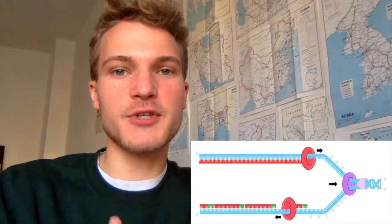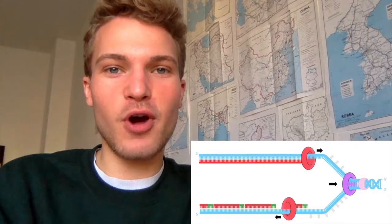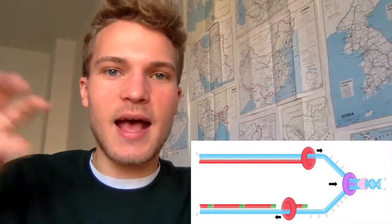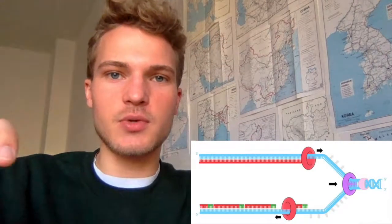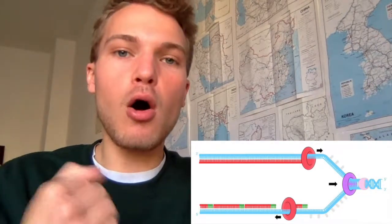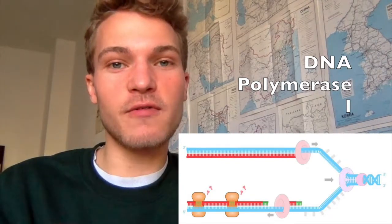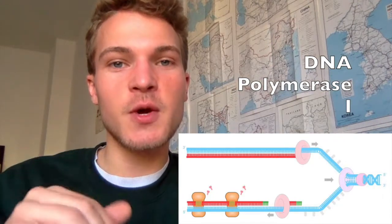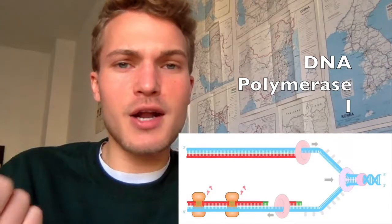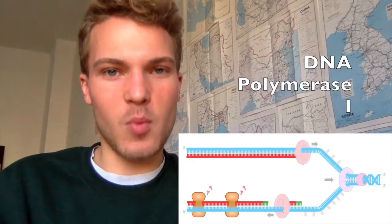Because DNA polymerase III cannot initiate the process, RNA primers from DNA primase are needed again and again on the lagging strand — each time it jumps to synthesize another section moving away from the replication fork. At the end, DNA polymerase I goes back and replaces all of these RNA nucleotides in the primer regions with DNA nucleotides, because we need a complete, fully DNA-based replicated strand when replication is finished.